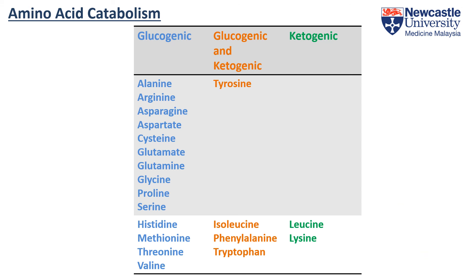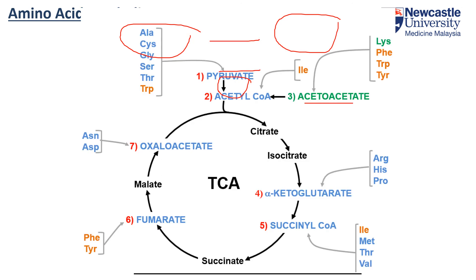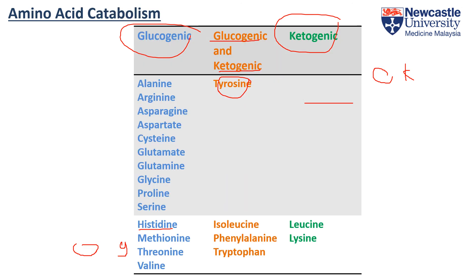If you were to organize all the amino acids into a table, you'll see that there are more glucogenic amino acids than the ketogenic ones, while some will be both glucogenic and ketogenic, such as tyrosine. Tyrosine can be used to make acetoacetate, which is a ketone body, making it ketogenic. At the same time, tyrosine can also be used to make fumarate, which can be used to make new glucose molecules, making it glucogenic. So tyrosine is both ketogenic and glucogenic. You just have to know that there are more glucogenic amino acids than ketogenic ones, and some will be both.